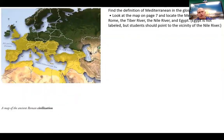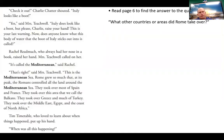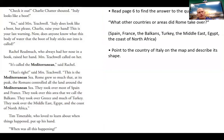Looking at the map, you can see Egypt is not labeled but was generally over here by the Nile River. This whole area here was taken over. What other countries did Rome take over in the area? Spain, France, the Balkans, Turkey, the Middle East, Egypt, and coastal North Africa — a whole lot of area.